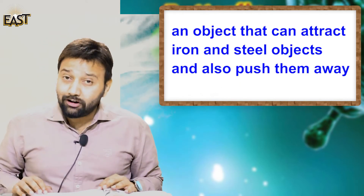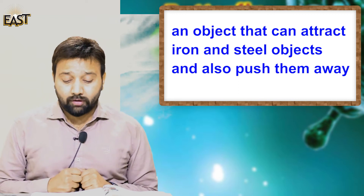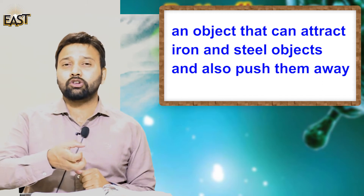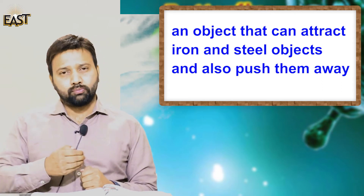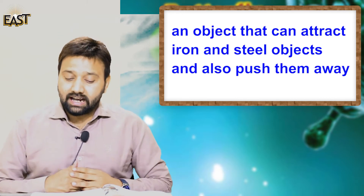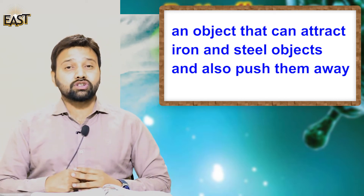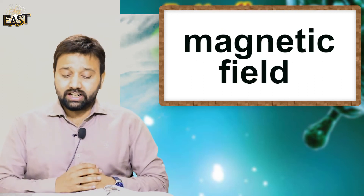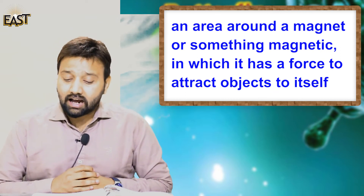Our next terminology is magnet. A magnet is an object that can attract iron and steel objects and also push them away. It attracts iron and steel and can also push them — such a thing is called a magnet. Our third terminology is magnetic field: an area around a magnet in which it has a force to attract objects to itself.